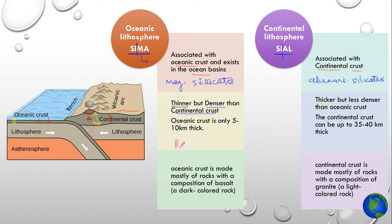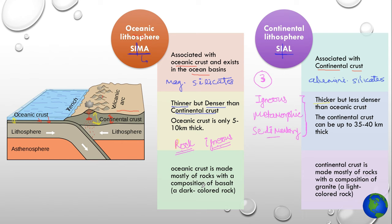In the crust you can find three types of rocks: igneous, metamorphic, and sedimentary. Continental crust is a good mix of all three types of rocks, whereas oceanic crust is mostly igneous rock. The oceanic crust is mostly made up of basalt, which is a dark colored and heavier rock. Continental crust is mostly made up of granite, which is a light colored and slightly lighter rock. This is the main reason why the density of oceanic crust is higher in comparison to continental crust.